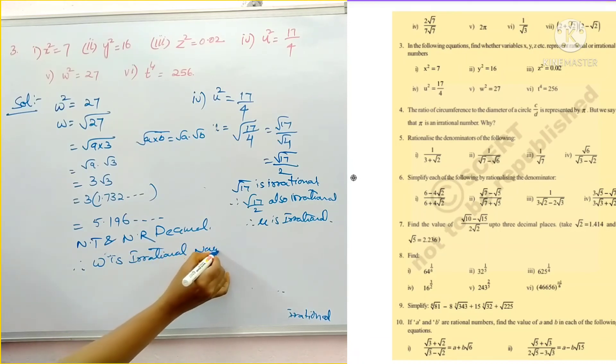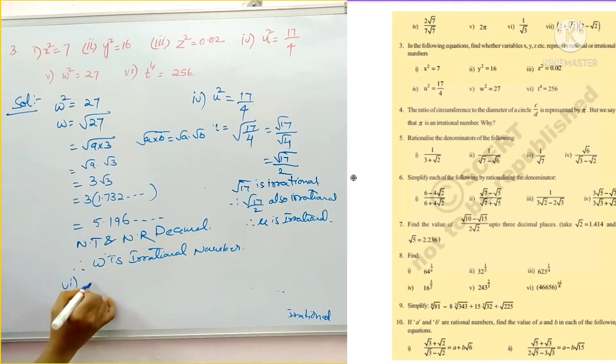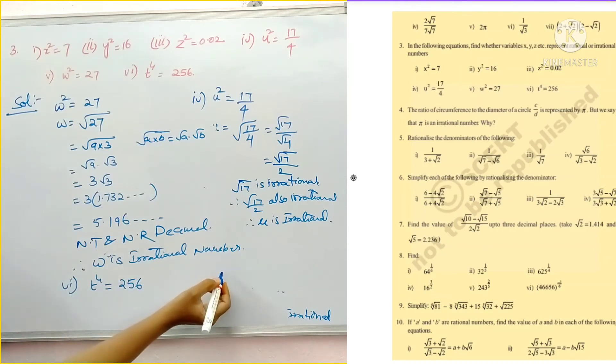And our last one. Sixth problem. T power 4 is equal to 256. First of all, this is 4th root. If it is square root, we can easily solve. But here it is 4th root.